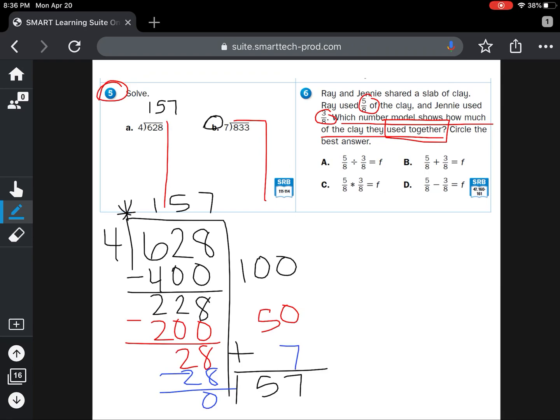So you're going to pick a number model, A, B, C, or D, to tell which one best represents how much clay they used together.